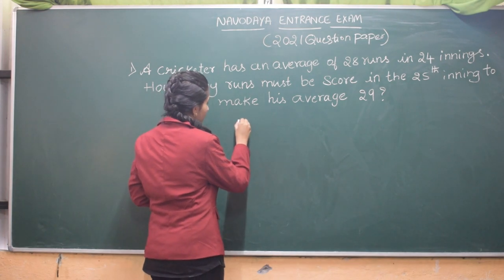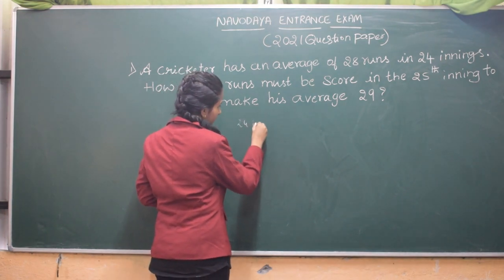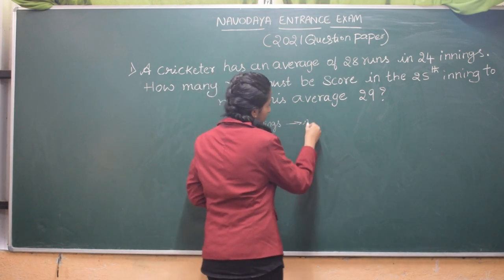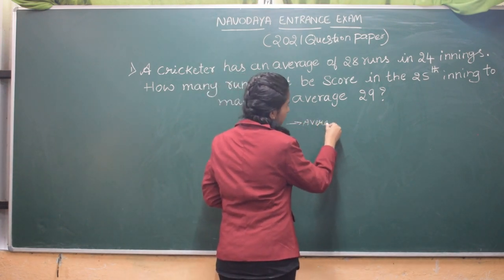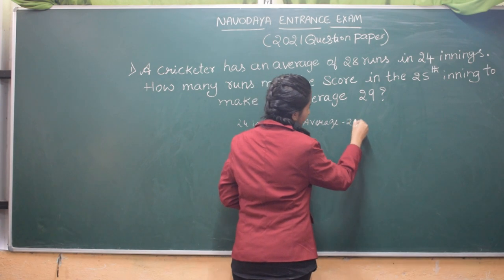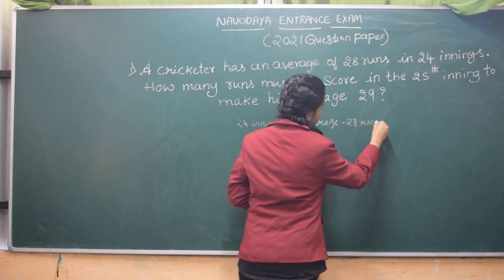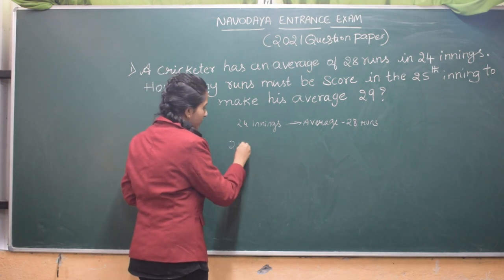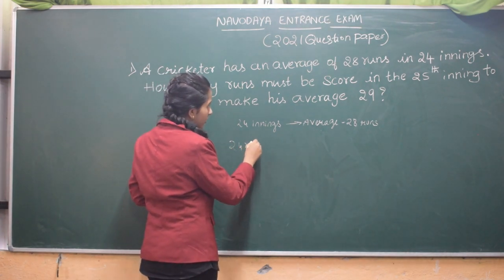So now for 24 innings, average is 28 runs. So we should calculate the total number of runs. So for that we should multiply 24 into 28.